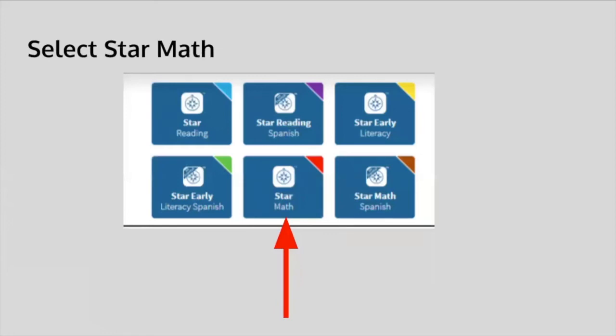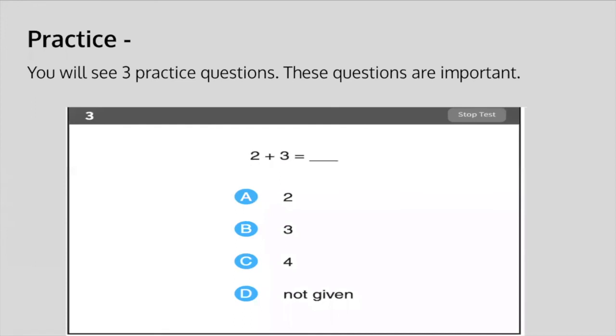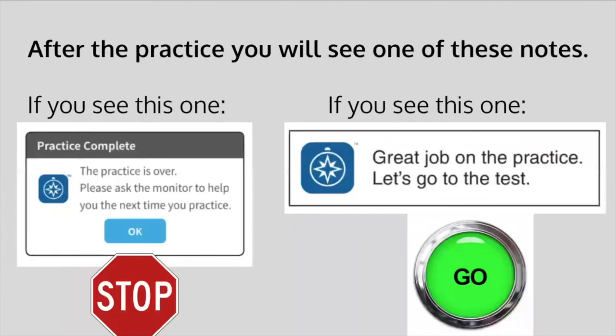Then you'll select the STAR Math test. You will see three practice questions — these questions are important, so try your best. After the practice, you will see one of two messages. If you see the message on the left, practice is complete — please ask the monitor for help and let your teacher know. If you see the message on the right — great job on the practice, let's go to the test — that means you can go on to your test.